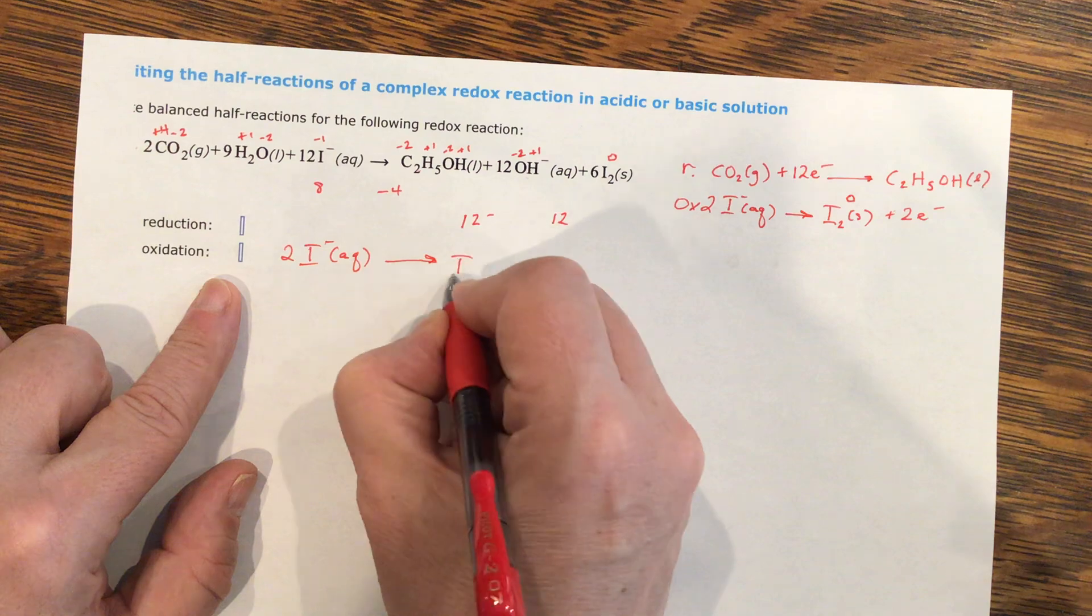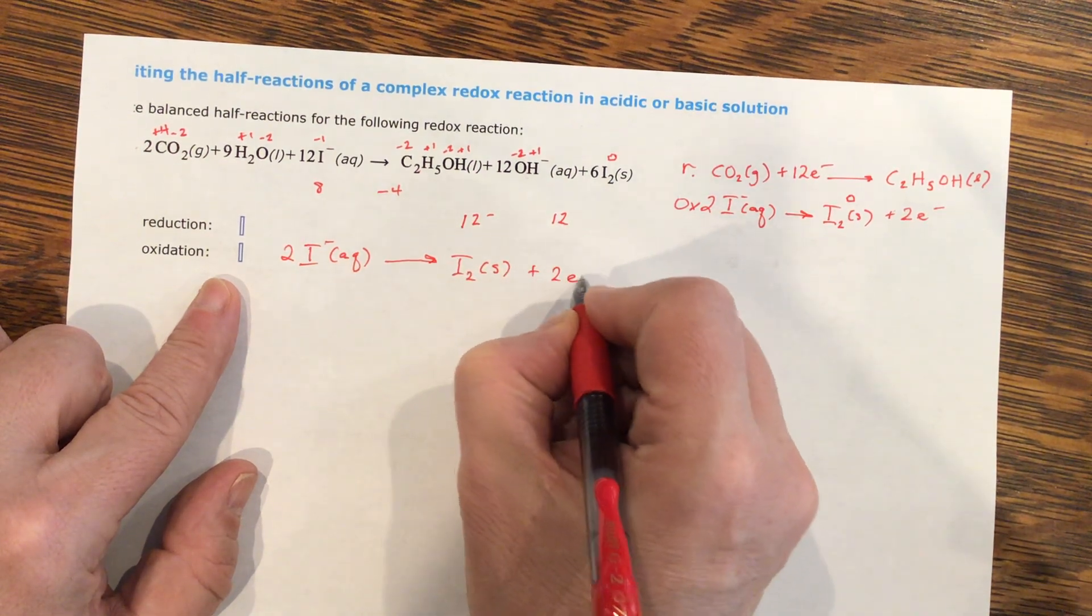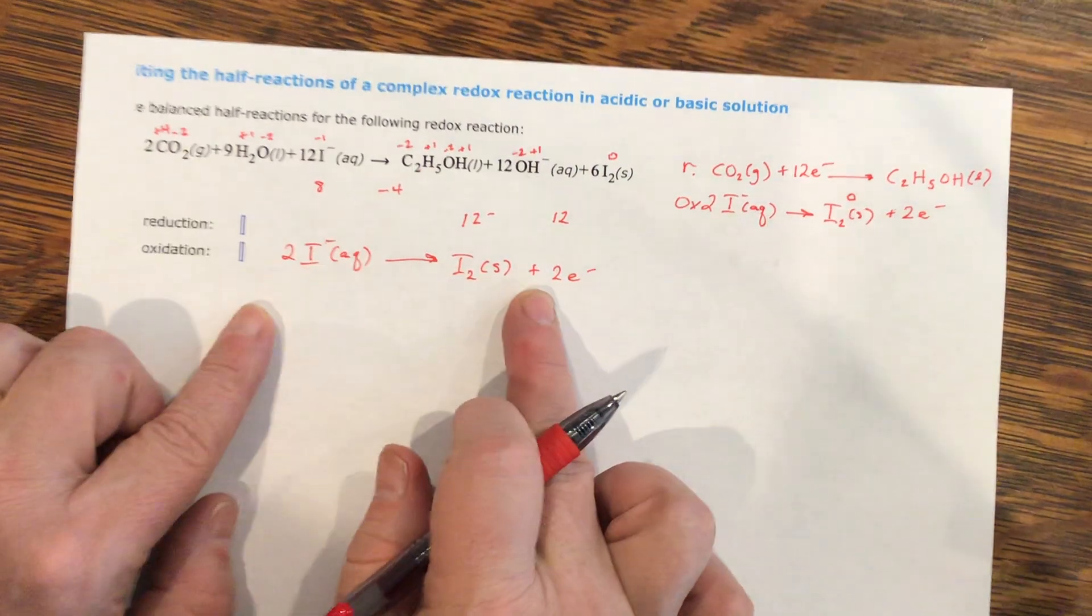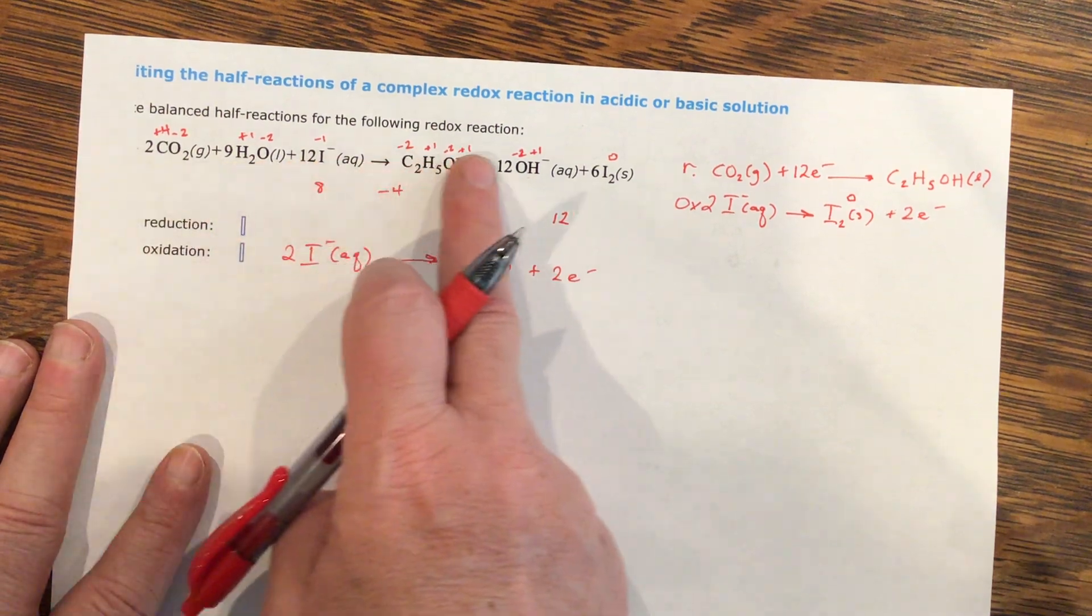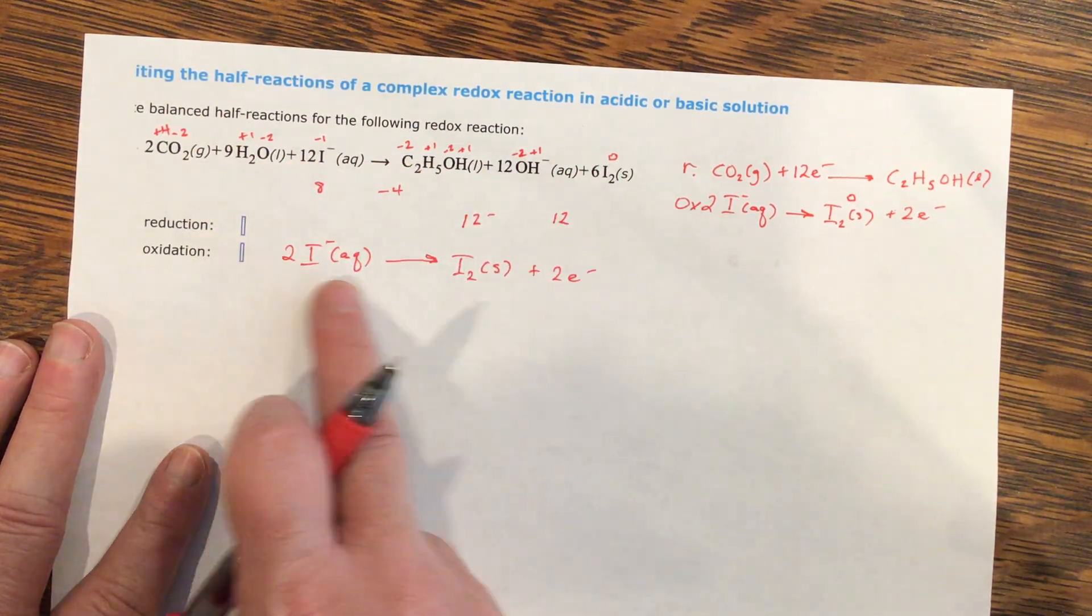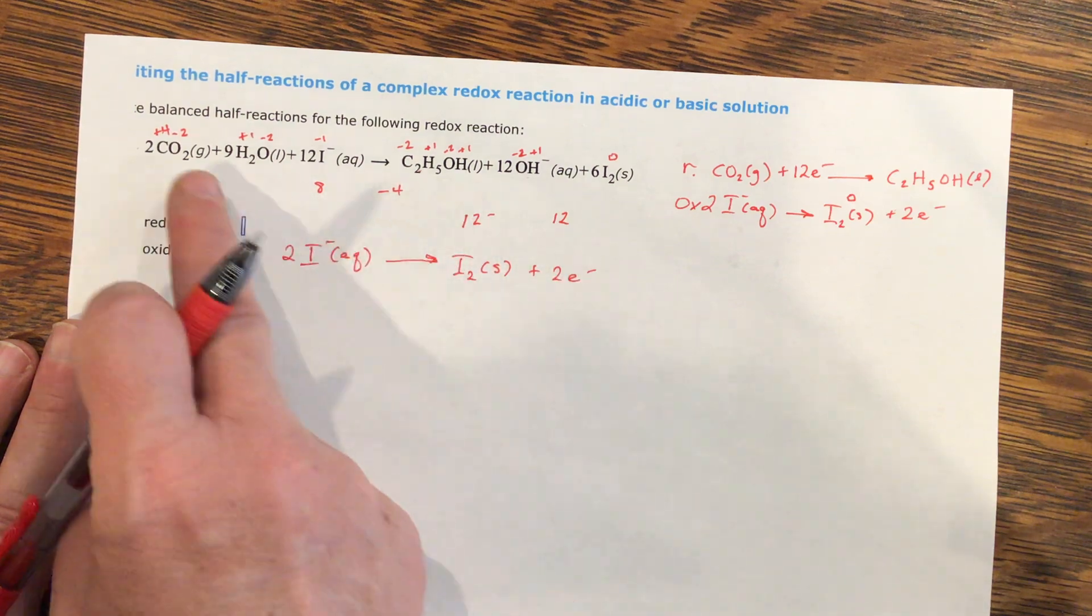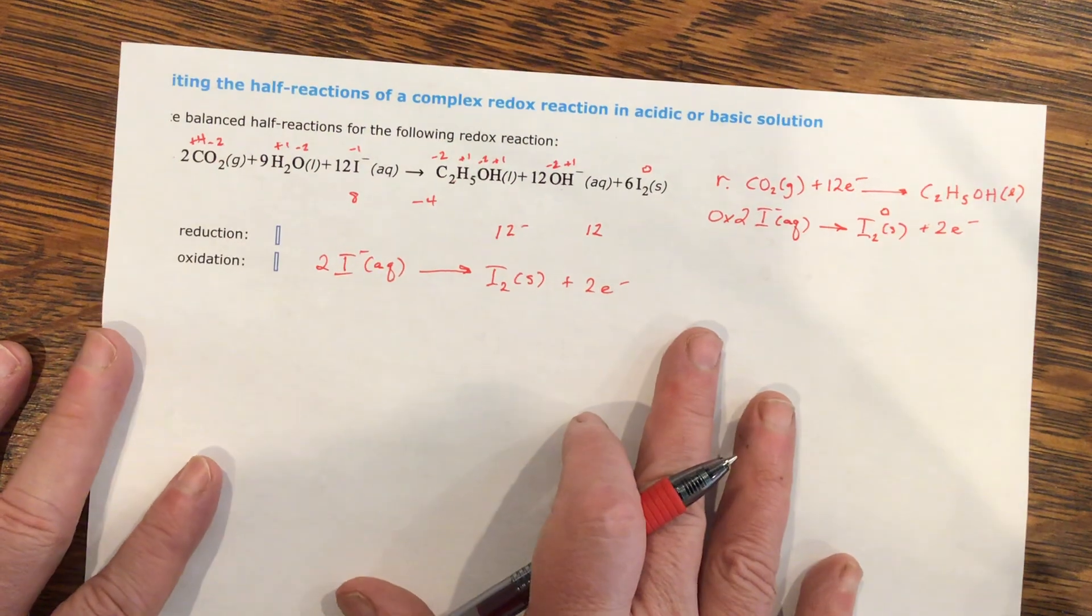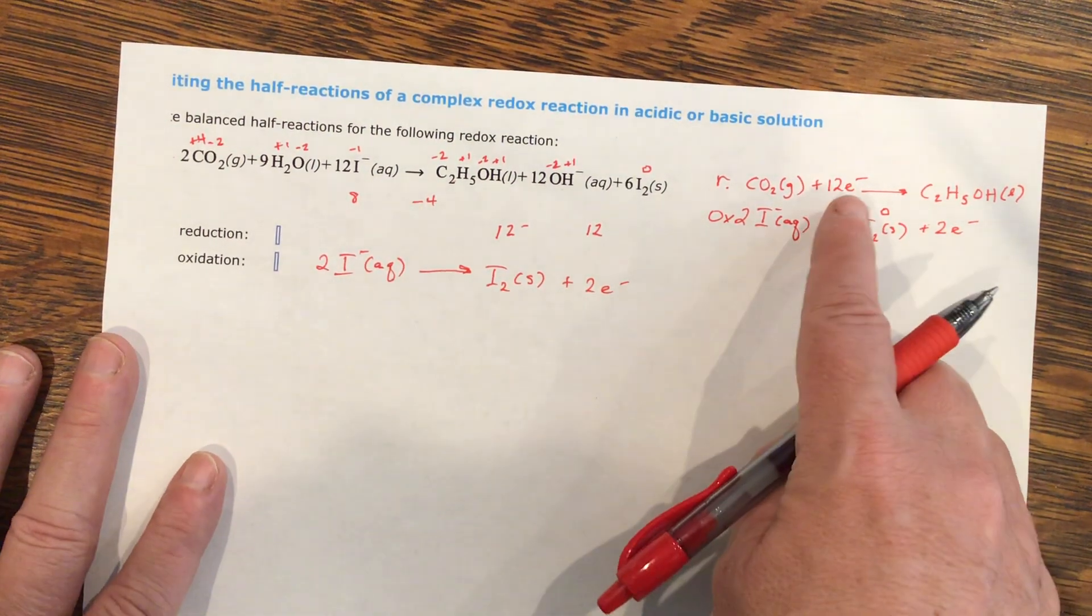So I2 solid plus two electrons. That's all I have, because that's all that's touching the eyes. There's nothing else here that has I in it. That means this is the only part that's oxidized. The other is everything else is your reduction. And I'm just going to copy it as, copy it as is right from here.